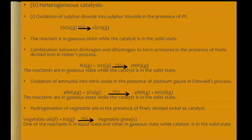Coming to heterogeneous catalysis. For example, sulfur dioxide changes to sulfur trioxide, and this reaction proceeds in the presence of platinum catalyst, which is solid. Since the reactants and the catalyst are in different phases, they refer to heterogeneous catalysis. Similarly, Haber's process, Ostwald process, and hydrogenation of vegetable oils in the presence of nickel catalyst all refer to heterogeneous catalysis.